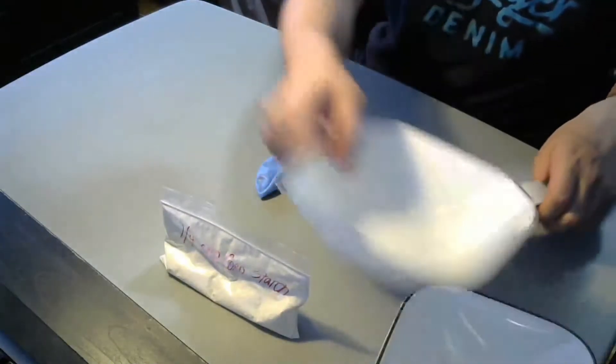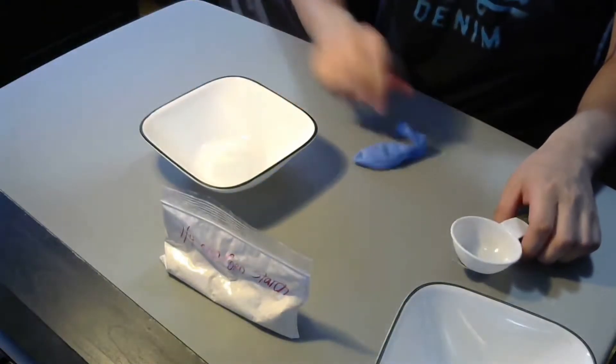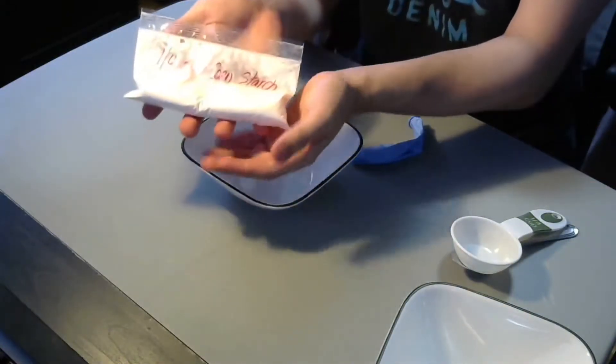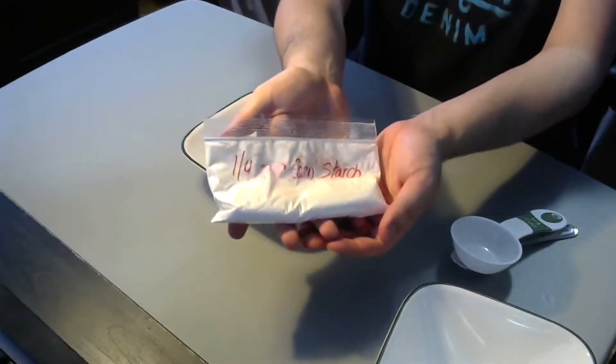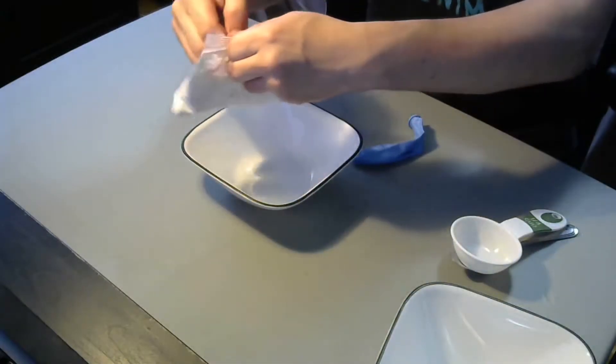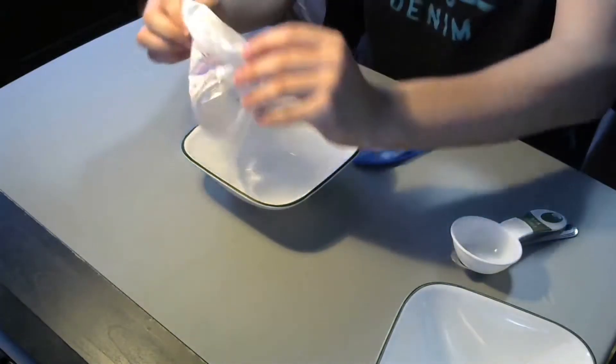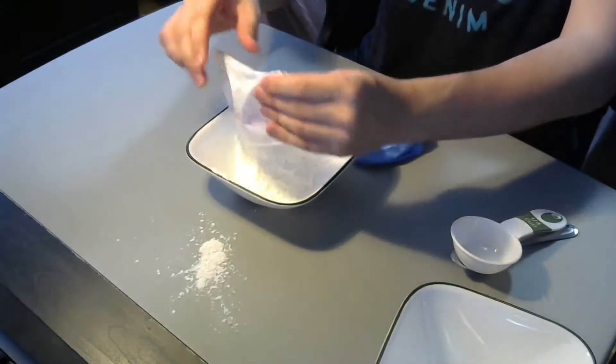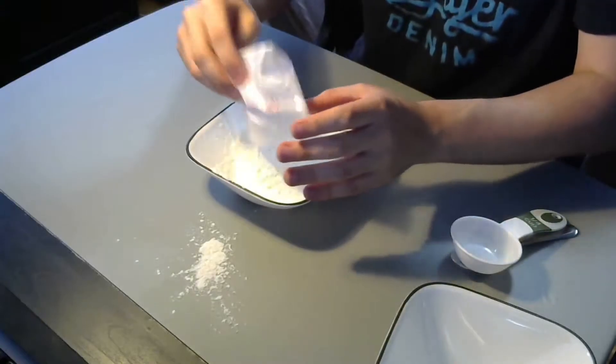What you're going to do is in a small bowl you are going to mix—get an adult if you need help—one quarter cornstarch. Just go ahead and pour that all out. Well, no one said science wasn't messy. That's fine though.